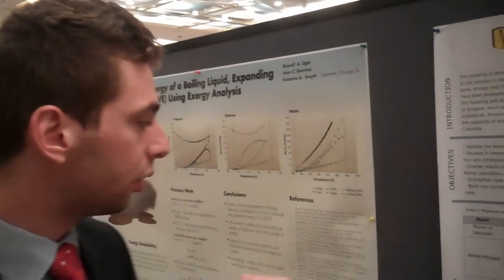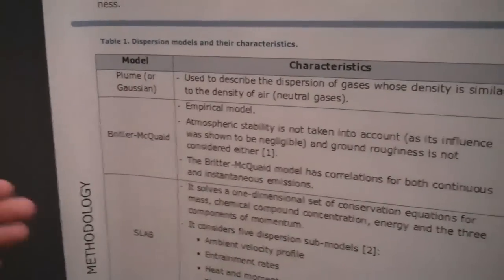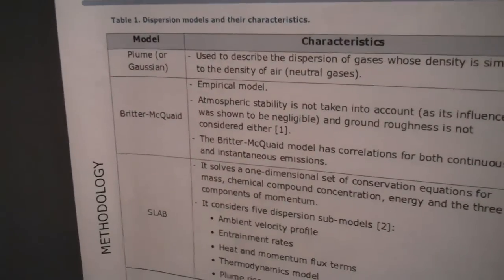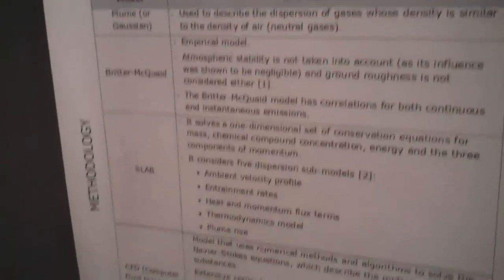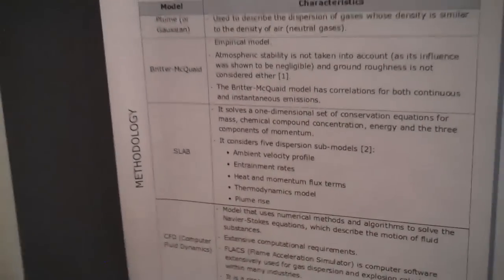What we wanted to do was validate certain models and build a computer tool that could be used by the government. So we picked the BLUE model — the Britain McQuaid model — which is completely an empirical model; the SLAB model that solves a one-dimensional set of conservation equations; and finally the CFD model, which is the most complete type of model existing nowadays in the industry.